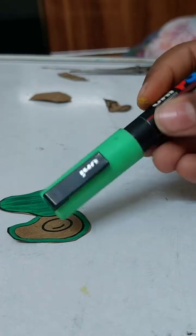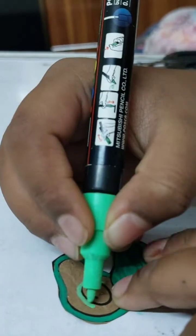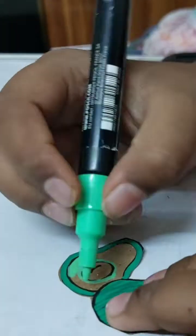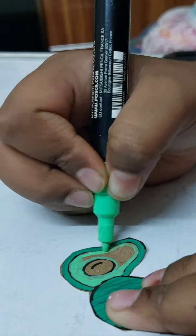Now we will use the dark green brush pen. This is the color. So we have almost done coloring.